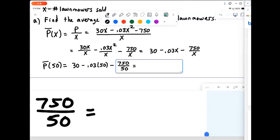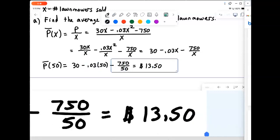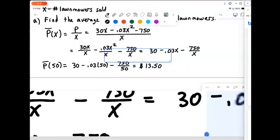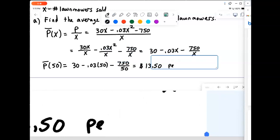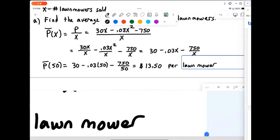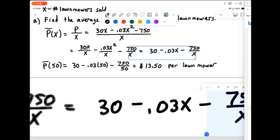So when we do that, make that computation, we get 13.50. And since P was in units of dollars, this is units of $13.50 per lawnmower. Right, that's the average profit, dollars per lawnmower.